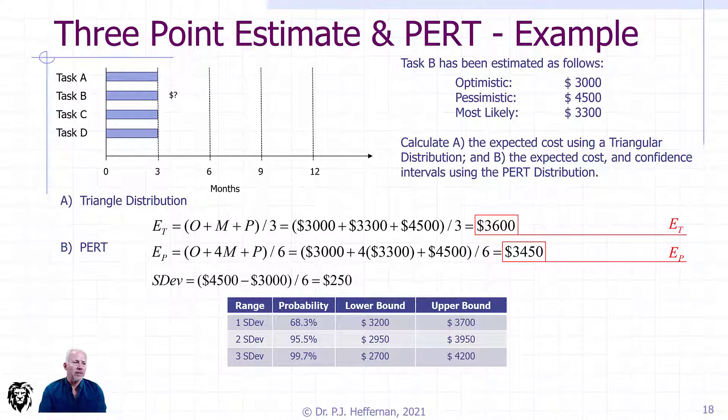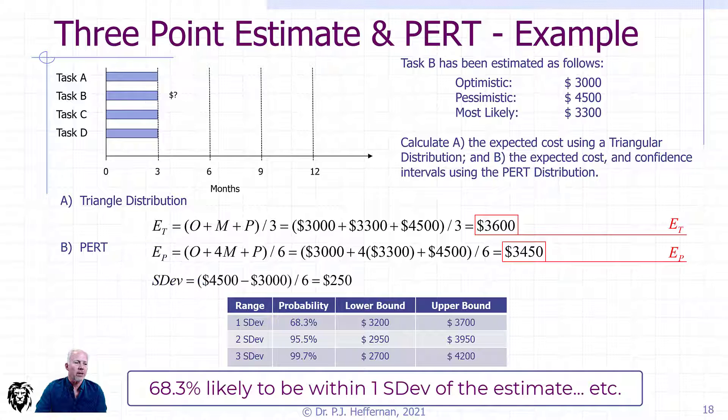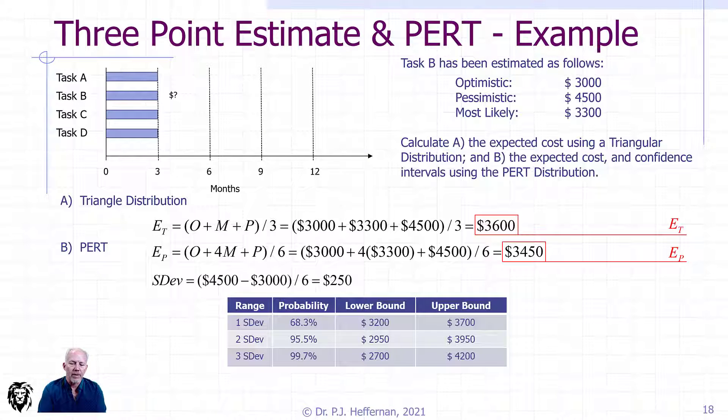That would break out to give us probabilities of achieving those various bounds. We would expect that if we're within one standard deviation of our estimate, the probability is we'll be above $3,200 and below $3,700. Or if we needed a higher confidence, we would have to extend those bounds out a little bit to get to 95.5% or 99.7% confidence that our estimate would be within those bounds.